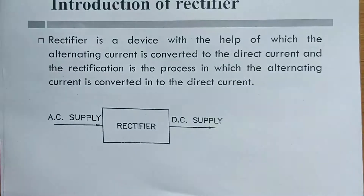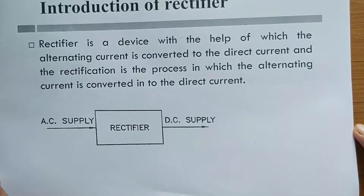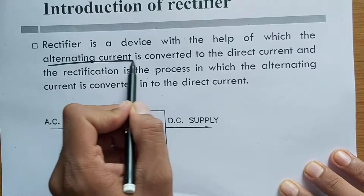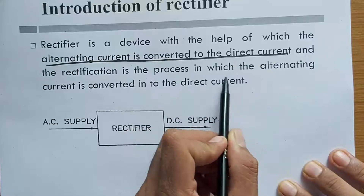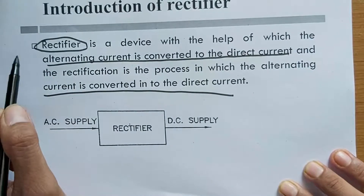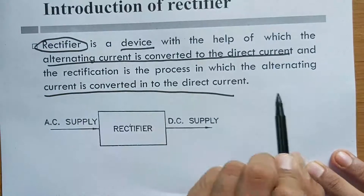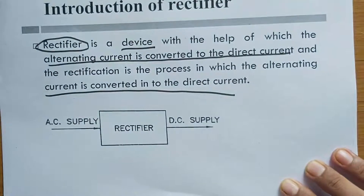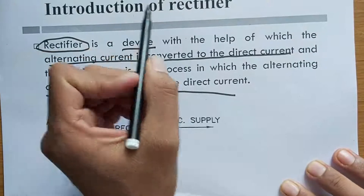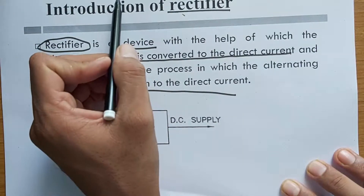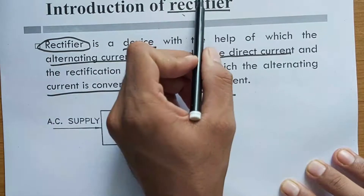Today we will understand the rectifier. First, what is a rectifier? A rectifier is a device with the help of which alternating current is converted into direct current. Rectification is the process in which alternating current is converted into direct current. The device or instrument used for converting AC into DC is called a rectifier.